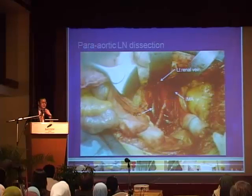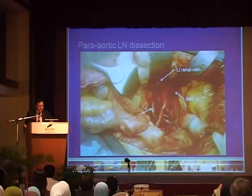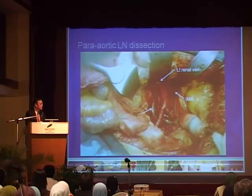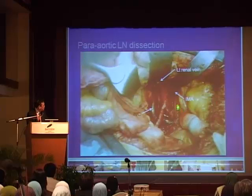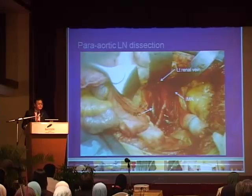Occasionally we do proceed with para-aortic lymph node resection. There is a lot of discussion regarding its significance, but in certain cases of suspicious nodes that are located over the pelvic area, and large nodes coming to the pelvic area, we embark on going up and assessing the para-aortic area, and occasionally — when we see nodes of 1 to 1.5 centimeters — we proceed to a systematic para-aortic lymph node dissection.